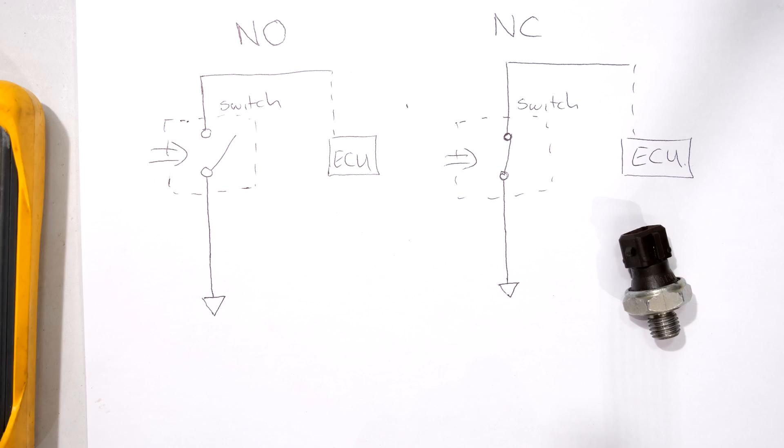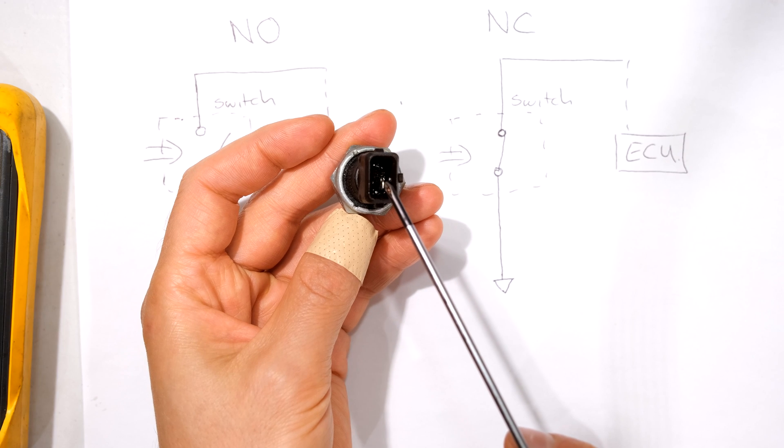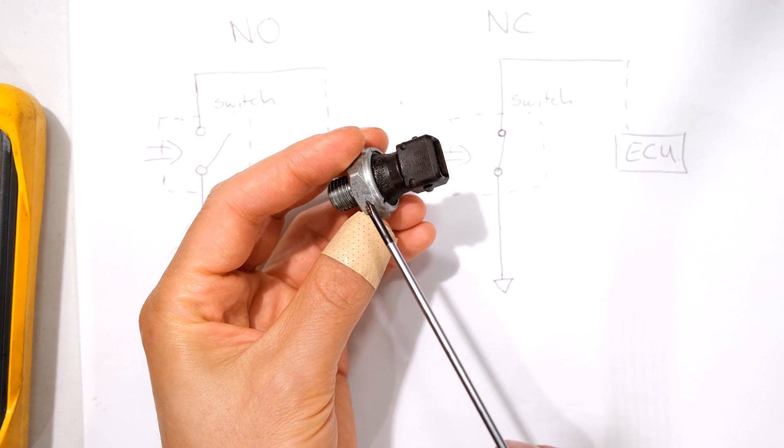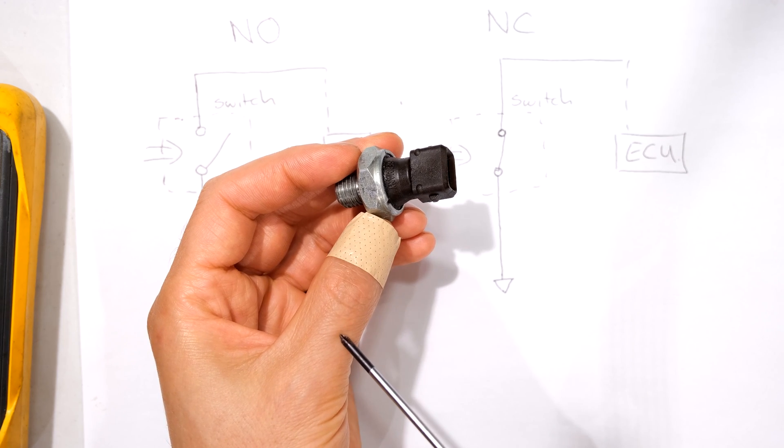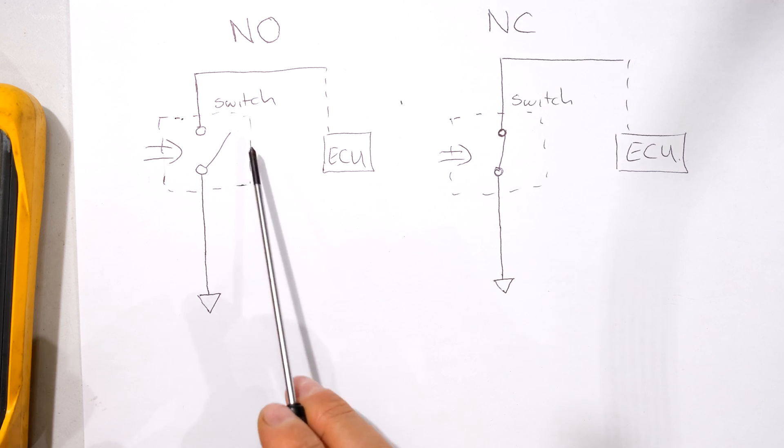Just having a look at the principle of operation we get a normally open and a normally closed oil pressure switch. For example this is the switch body and the switch is connected to your ECU. If you look at this one it says normally open. That means that when the car is off the point from the terminal to the body of the oil pressure switch is an open circuit. When the oil pressure builds up to the correct point for your engine the switch actually goes closed circuit.